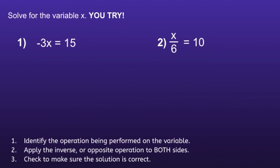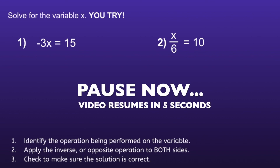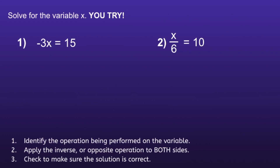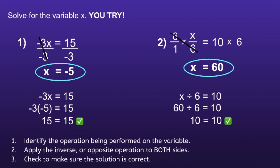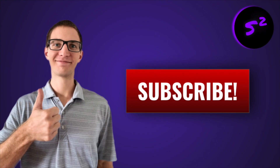There are a couple more problems on the screen for you to try. I recommend you pause the video, solve the problems, and resume when you're ready to check your solutions. For number 1, x is equal to negative 5. For number 2, x is equal to 60. If you answered either incorrectly, review the work and try to find your mistake. Thank you for watching.